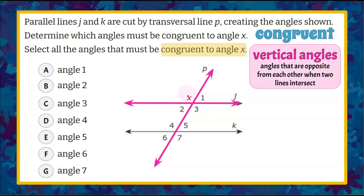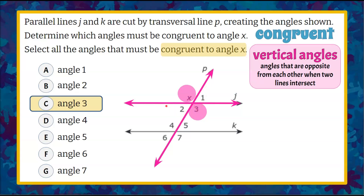So when I look at angle X, the angle that is opposite angle X formed by these vertical lines is angle 3. Therefore, we can determine that angle 3 is congruent to angle X because they're vertical angles formed by these two intersecting lines.